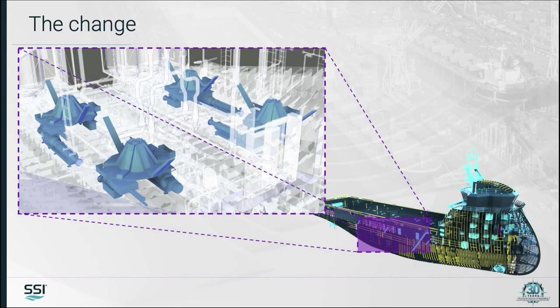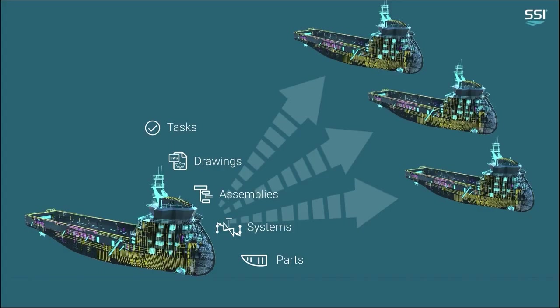The drill feeders on this 80-metre anchor handling tug need to be repositioned inboard to improve performance, based on the sea trials of a previous design. Once reviewed and approved, the changes will be transferred to the sister ships in the class. This includes model changes, drawing changes, and updating the bill of materials.